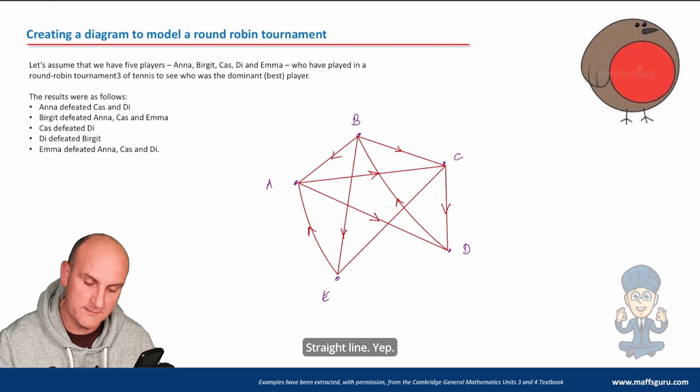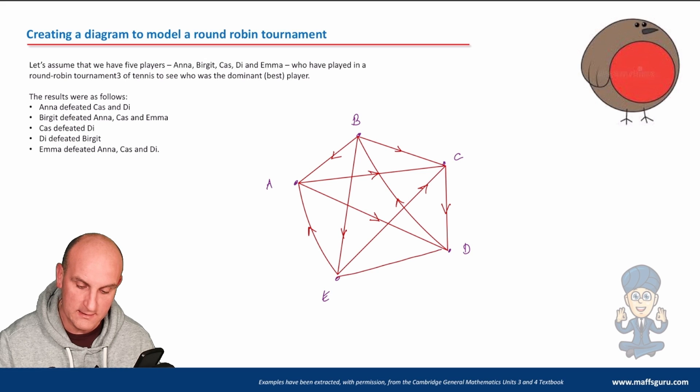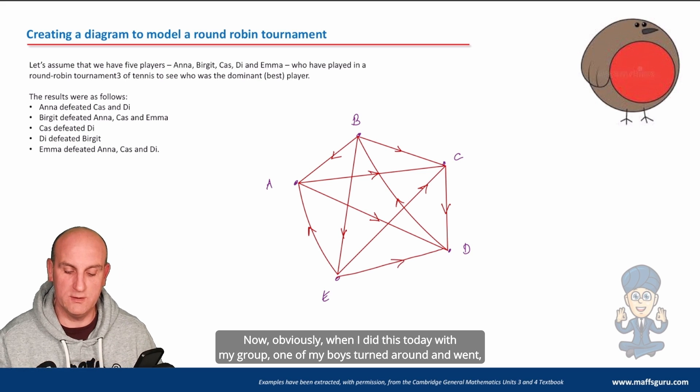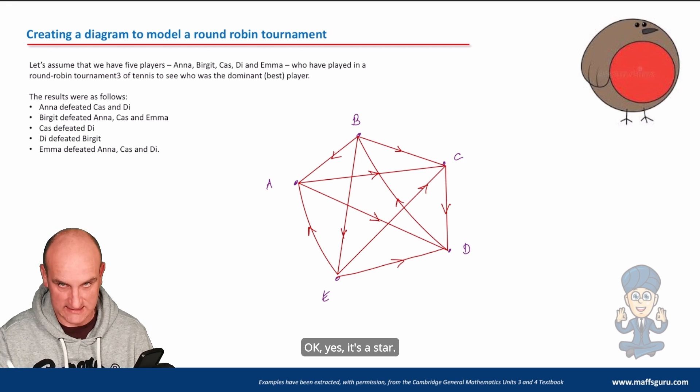And Emma defeated Anna. Emma defeated Anna - oh, curved. Emma defeated Kaz. Straight line - yep - and arrow there. And Emma defeated Dye.